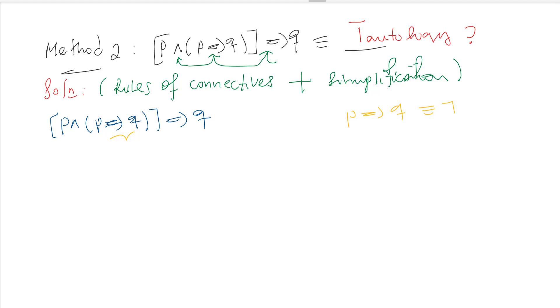We have implication here. We are going to use the rules of connectives and simplification, commutative rule, associative rule, distributive property. Let's start [p ∧ (p→q)] → q. Let's start from inside. p→q is equivalent to the negation of the first proposition or second.